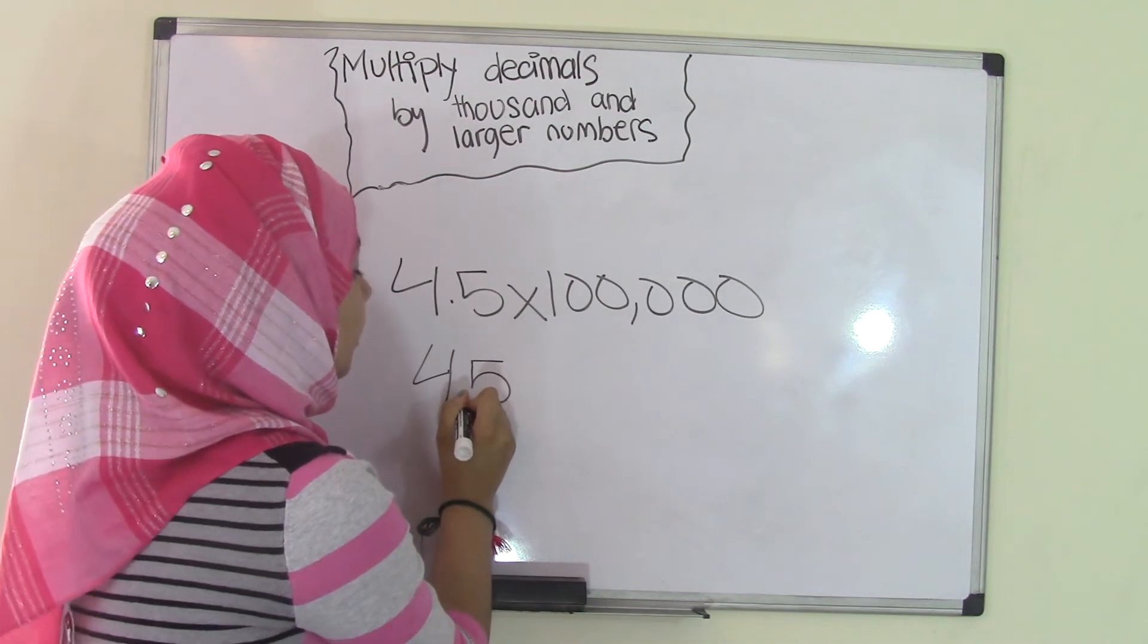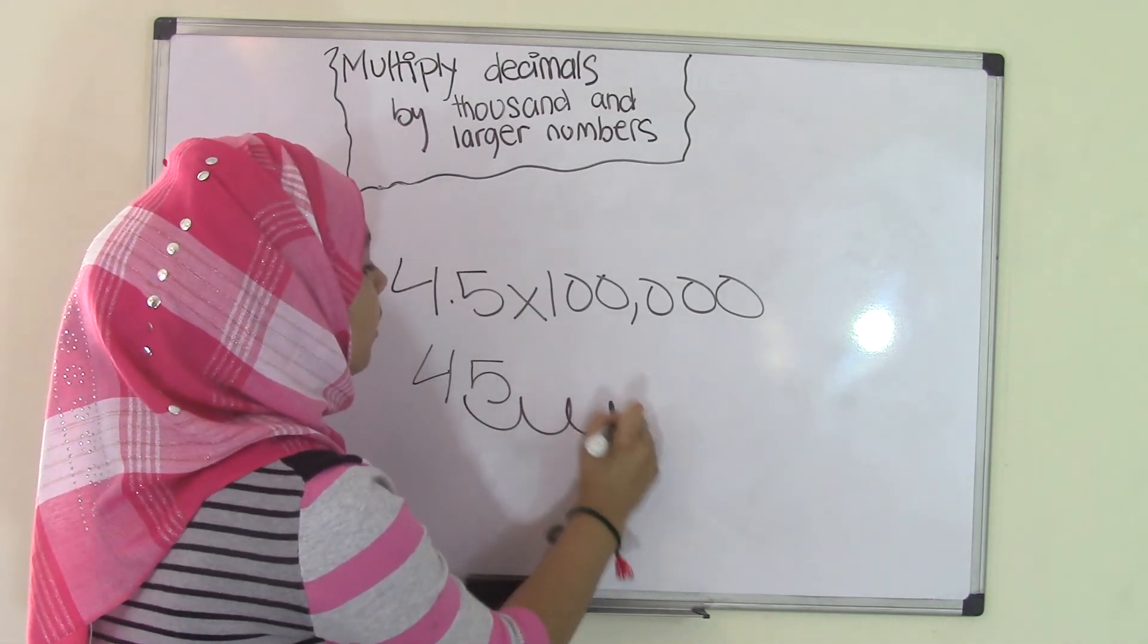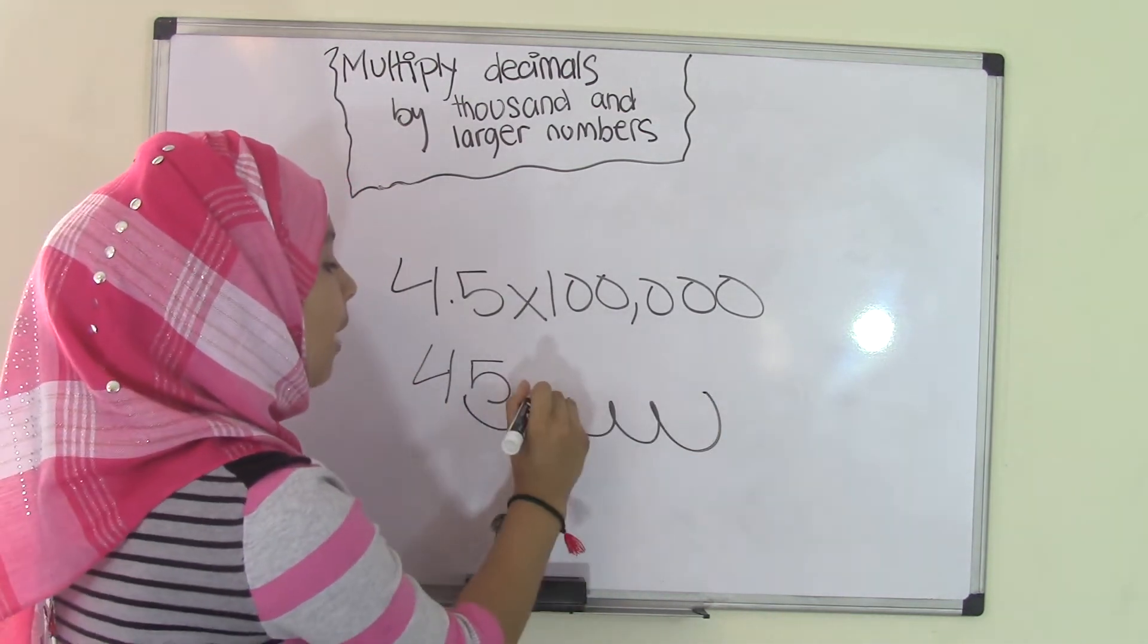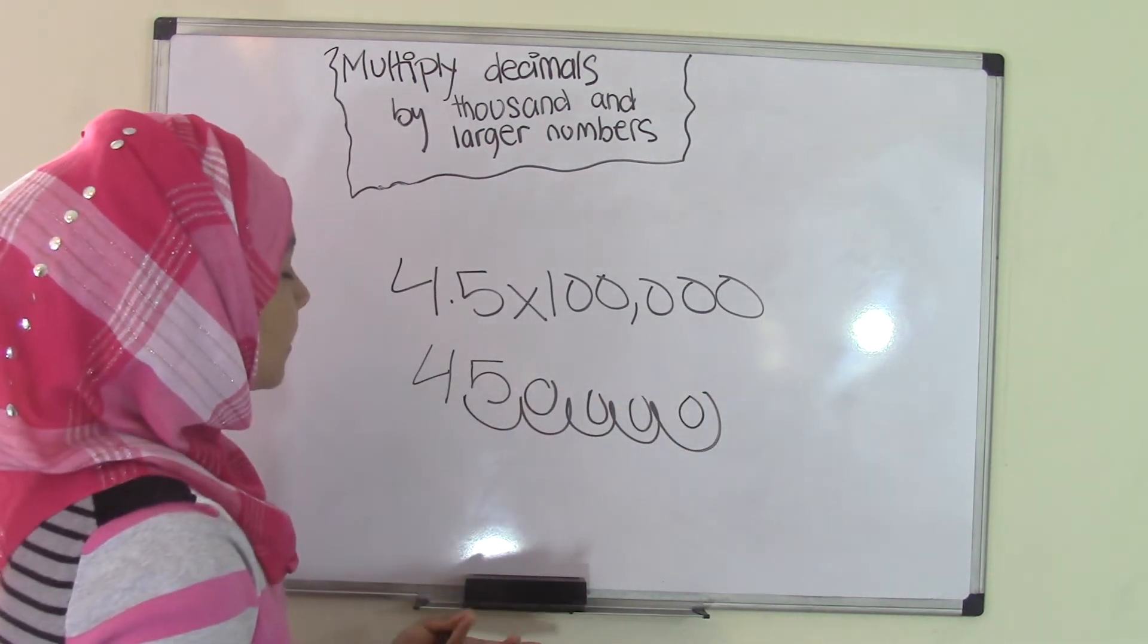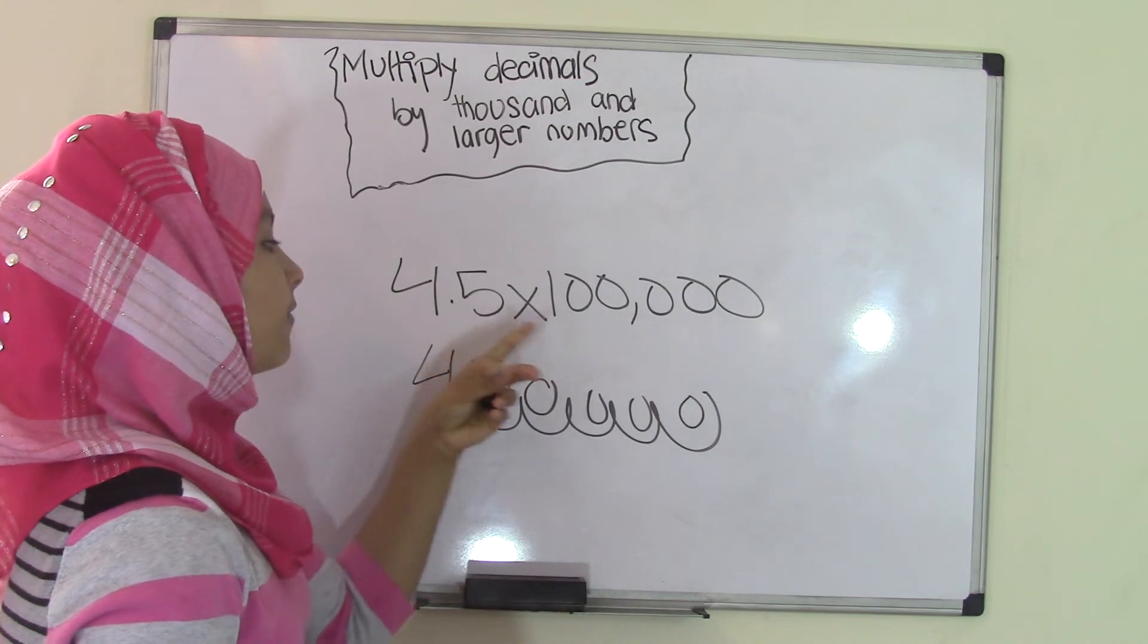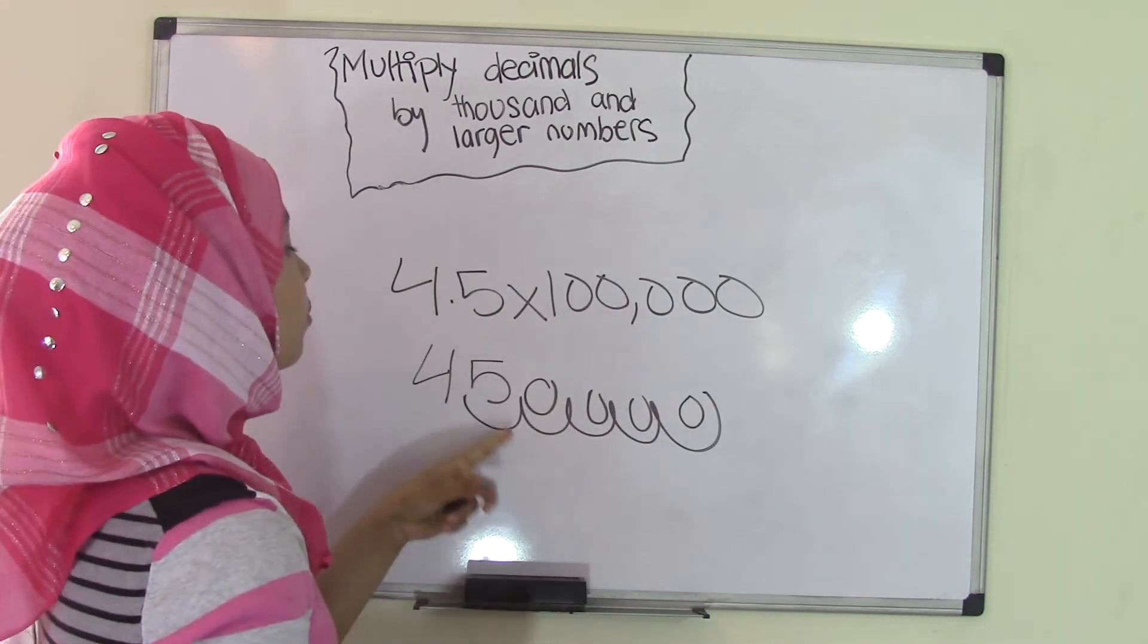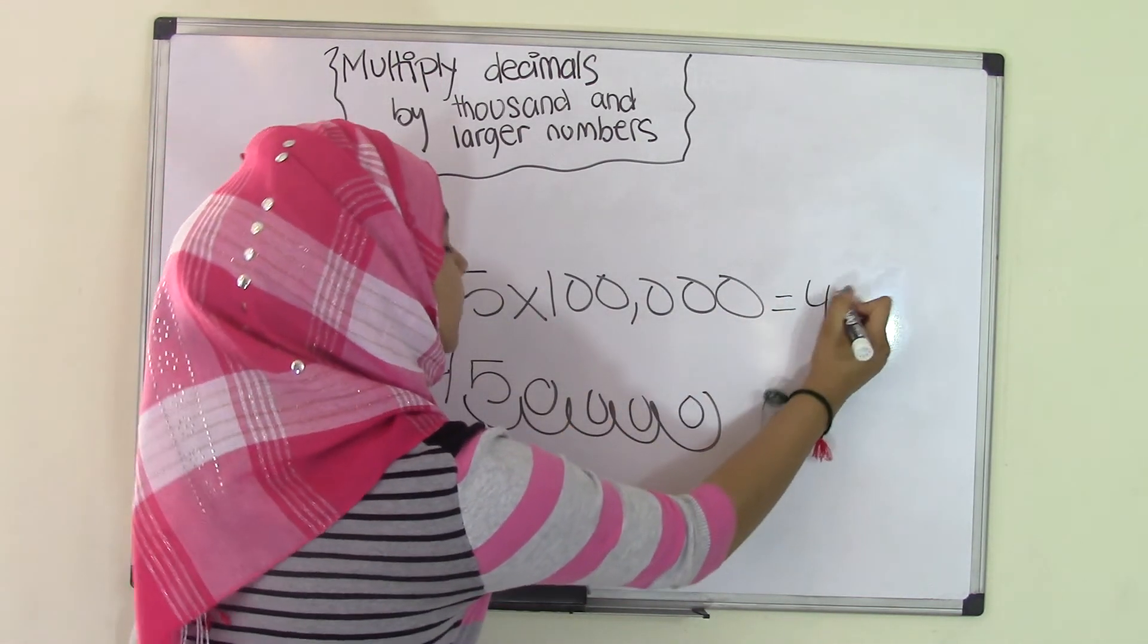So, we're going to take this decimal point and go 1, 2, 3, 4, 5. And in the gaps, we're just going to put in zeros. So, as you can see, the product of 4.5 times 100,000 equals 450,000.